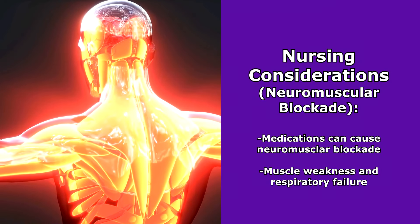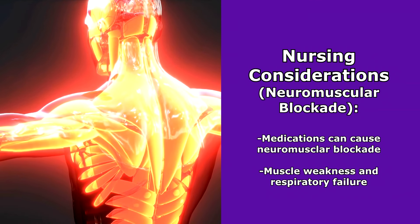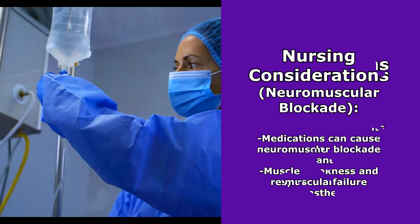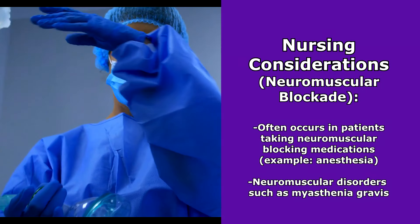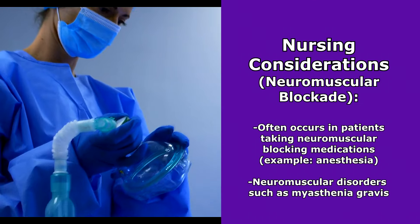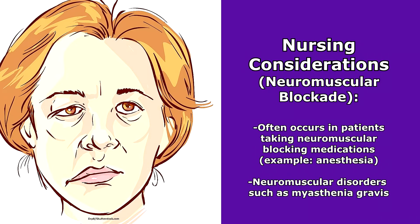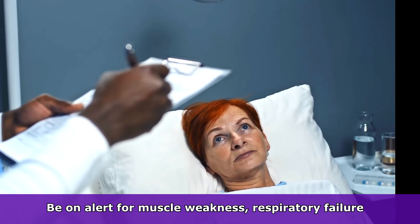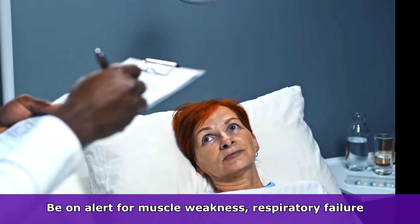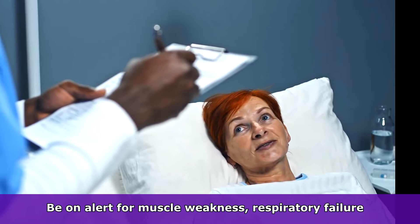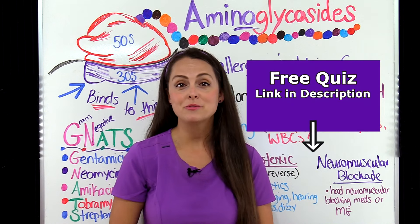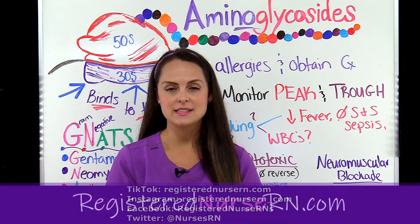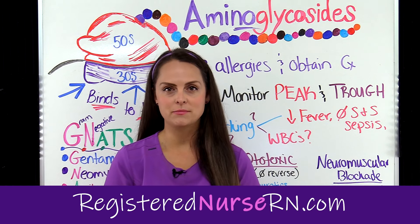Lastly, this medication can cause a neuromuscular blockade, experienced through muscle weakness and respiratory failure. This tends to happen in patients who have received neuromuscular blocking medications such as during anesthesia, or who have neuromuscular disorders like myasthenia gravis. In these patients, be on high alert for muscle weakness and respiratory failure. That wraps up this review of aminoglycosides. If you'd like to watch more review lectures on antibiotics in this series, you can access the link in the YouTube description below.